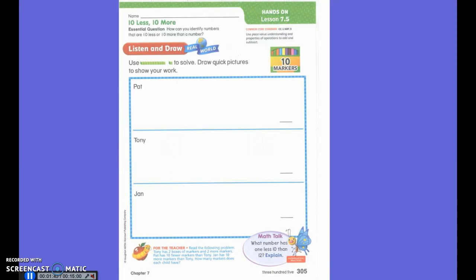So we're going to talk about basically the same thing today except we're going to do quick draws instead of on the hundredth number chart. We can use the hundredth number chart to help you check your work, but we're going to do it a little bit differently. Tony has two boxes of markers and two more markers. Which one is Tony? The middle one.